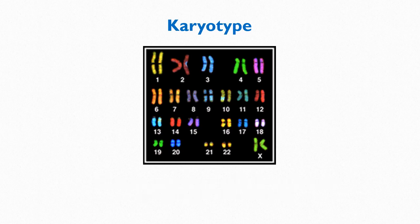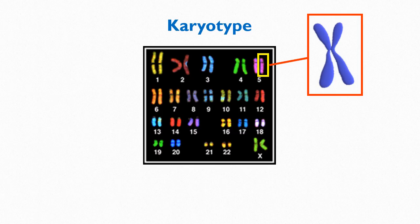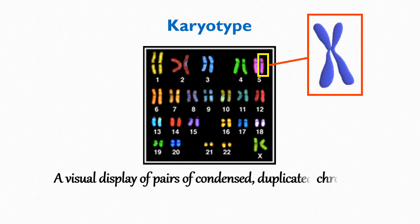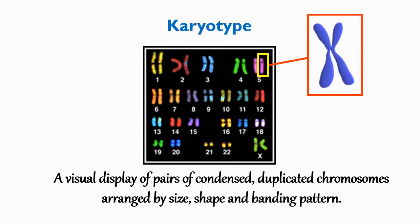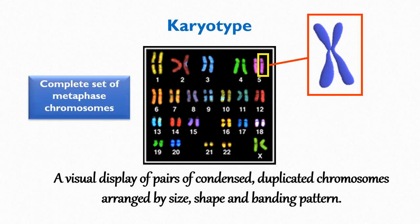Remember that each chromosome in the karyotype is a duplicated chromosome — that means each chromosome consists of two sister chromatids joined along their lengths. So karyotype can be defined as a visual display of pairs of condensed, duplicated chromosomes arranged by size, shape, and banding pattern. It represents the complete set of metaphase chromosomes.